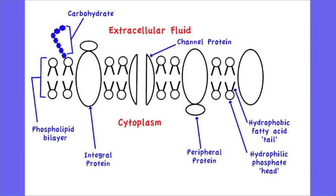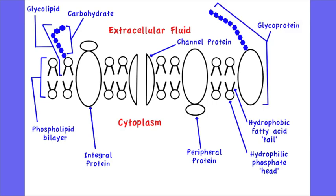If you add carbohydrates onto your phospholipids on the outside, you then start to call those glycolipids. The same thing can be said if you add the carbohydrates onto a protein—that becomes a glycoprotein.